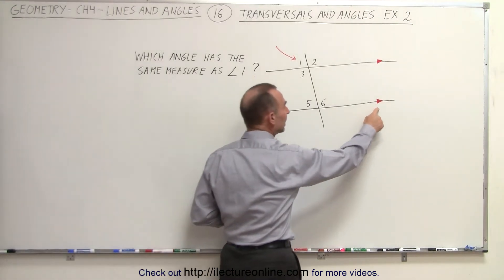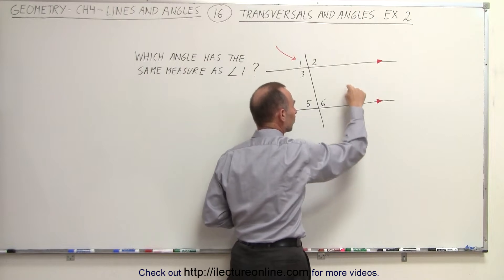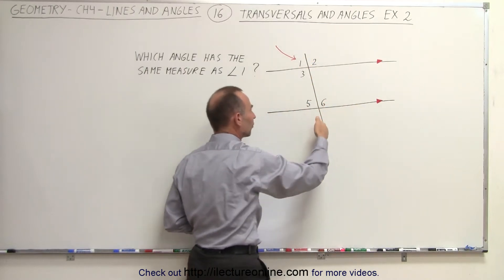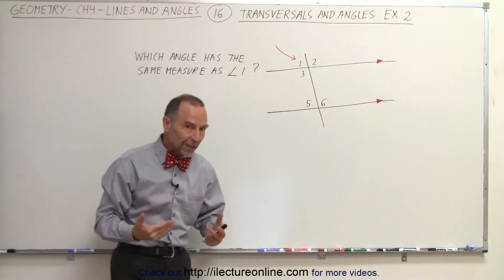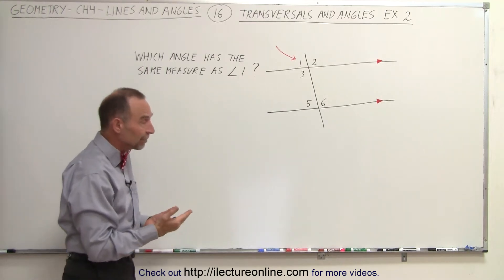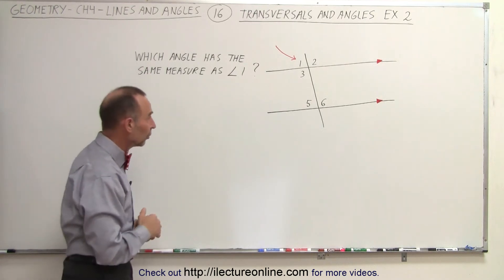These little symbols over here indicate that these two lines are parallel to one another, and this is the transversal. So let's go through each one of the other angles and see if they could have the same measure as angle 1.